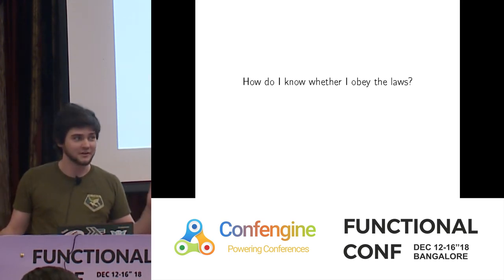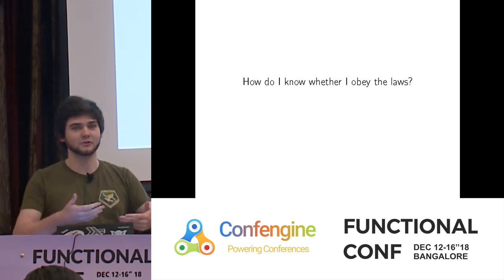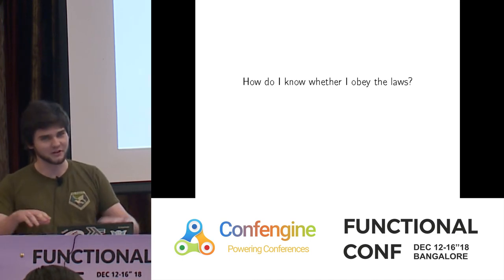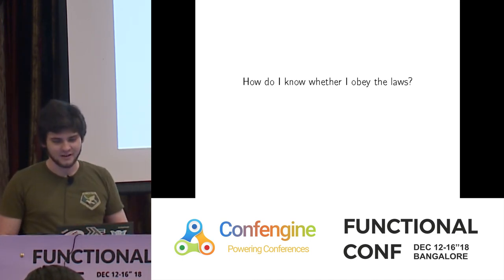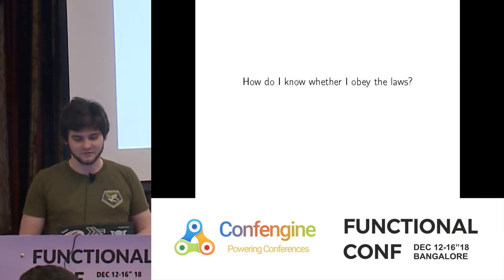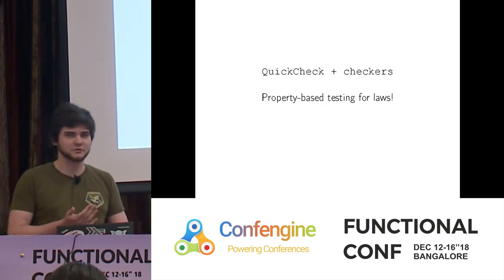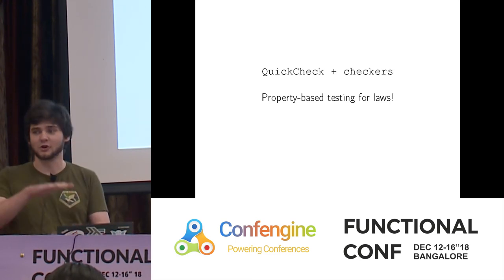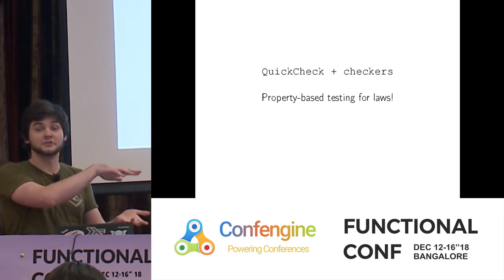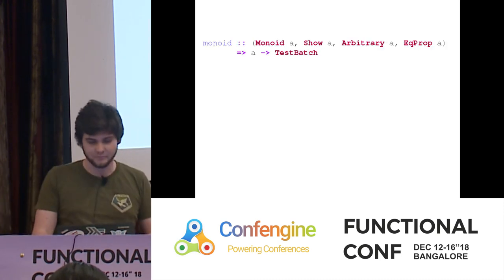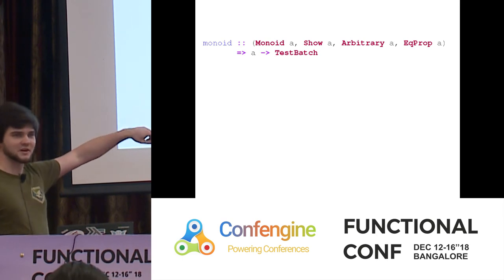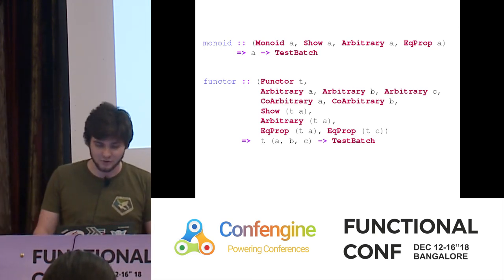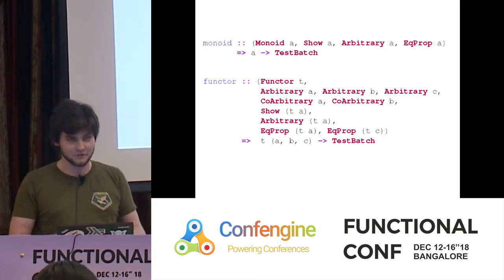When you make your own instances of type classes with laws, how can you know whether you obey the laws? A subtle instance that breaks a law in a specific case can be a very subtle cause of bugs. There's an excellent way to check: use the property-based testing library QuickCheck, with another library on top called Checkers. Checkers is full of pre-canned test cases for all the different laws — Monoid laws, Functor laws, Monad laws. I use Checkers all the time to check my laws.